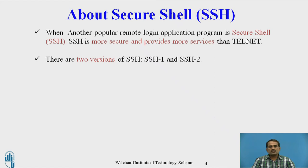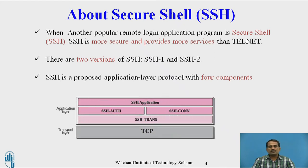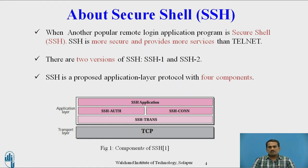There are two versions: SSH 1 and SSH 2. SSH is a proposed application layer protocol with four components. In SSH there are four components: the transport layer uses only TCP; at the application layer there is SSH transport layer protocol, SSH authentication, SSH connection, and SSH application. These are the four components used in Secure Shell.